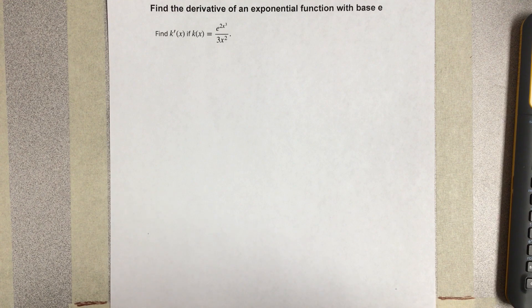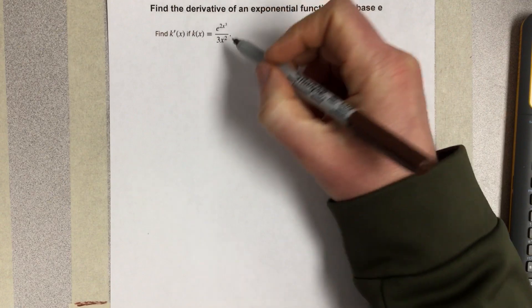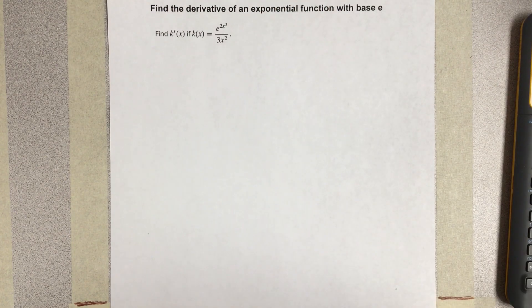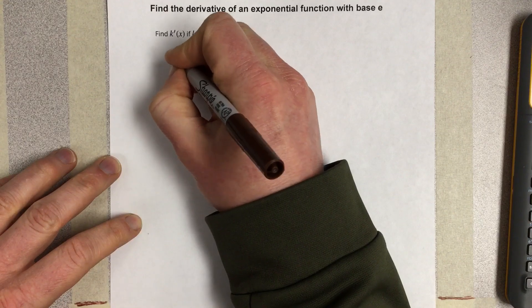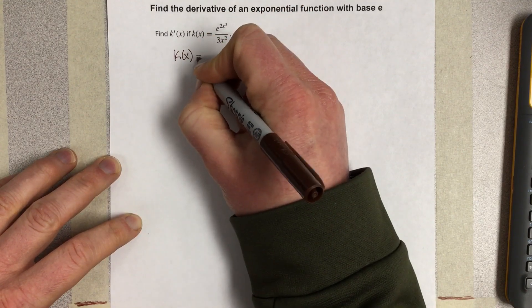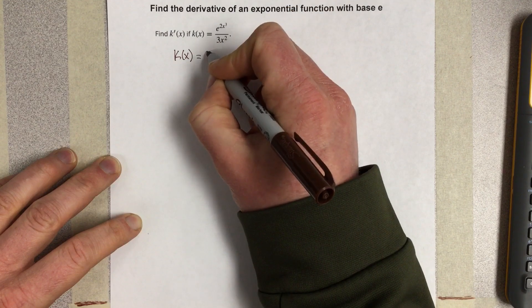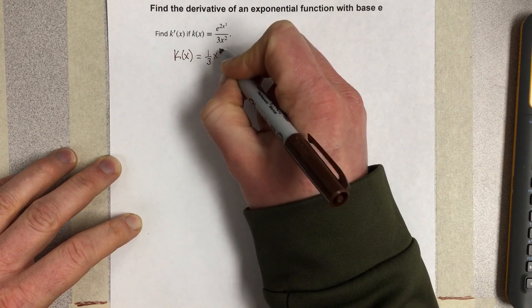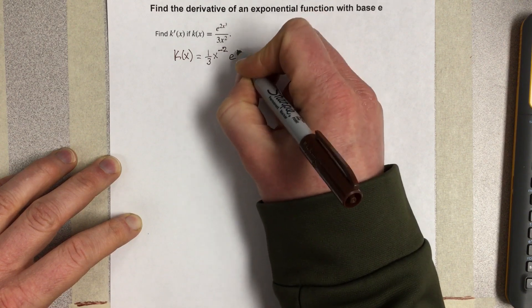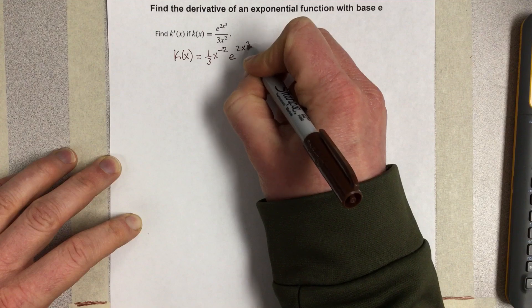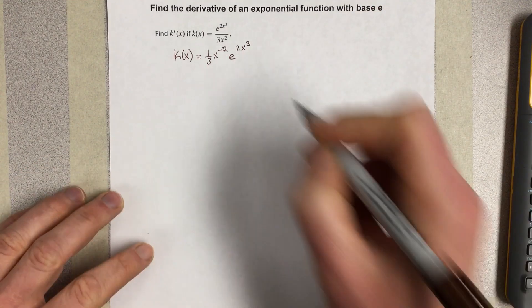I can approach this problem in a couple different ways. I can use the quotient rule here, or I could bring the x squared into the numerator, make it x to the negative 2, and use the product rule. I like the product rule best, so I'm going to rewrite this as k of x equal to 1 third, x to the negative 2, e to the 2x cubed, just to make it a little bit easier.